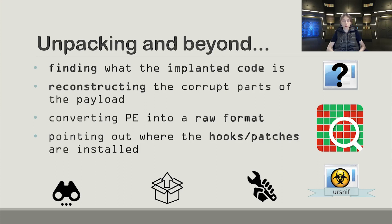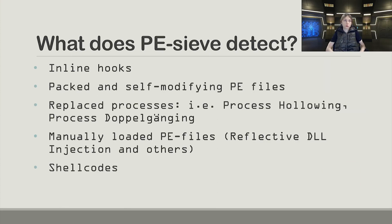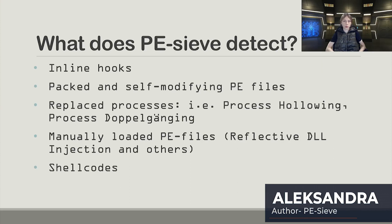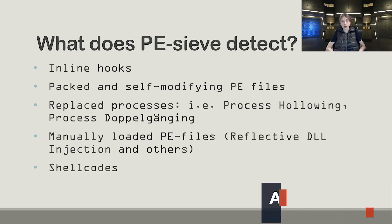PECF also points out where hooks and patches are installed in memory, providing a report with all the details. So what does PECF detect? To recap: inline hooks, packed and self-modifying PE files, replaced processes using methods like process hollowing, process doppelgänging, and similar techniques. Manually loaded PE files — for example, fully injected via reflective DLL injection and others. And if run with a particular parameter, it can also detect shellcodes.